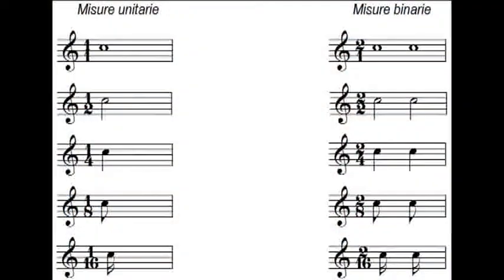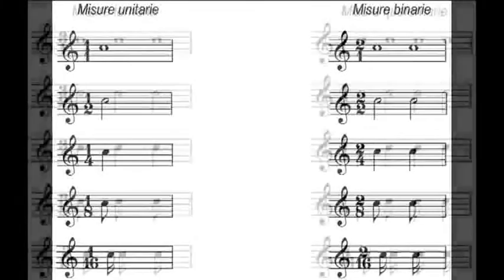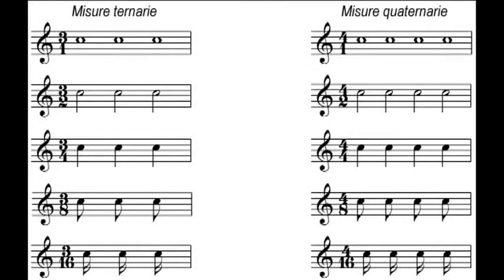Gli esempi susseguenti mostrano la realizzazione dei tempi sul pentagramma. Ci siamo avvalsi sia della semibreve, della minima e della semiminima, sia della croma e della semicroma, anche se le figure di valore più in uso sono la minima, la semiminima e la croma. Realizziamo ora, avvalendoci di tempi semplici, con denominatori di sole tre figure — minime, semiminime e crome — una serie di sei misure simili per ogni tipologia mensurale.